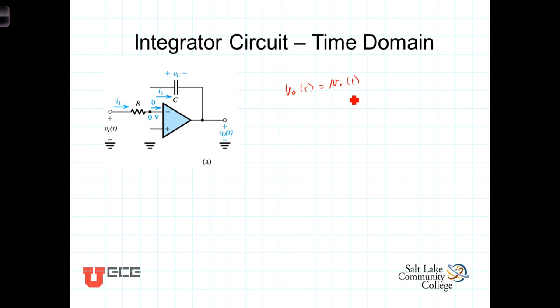Now we know that the current flowing through here, I as a function of time, is equal to V in of T divided by the resistance.